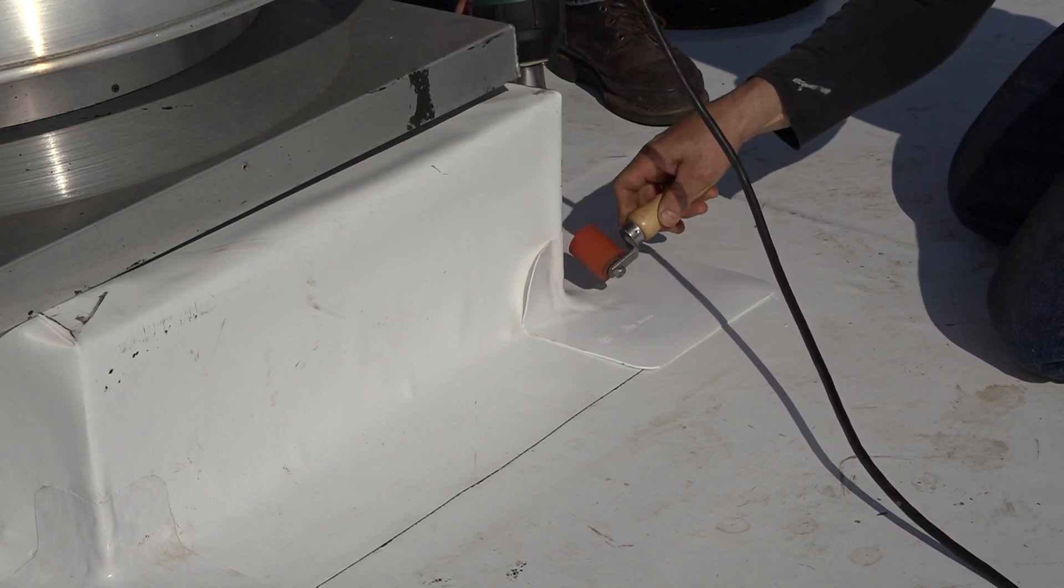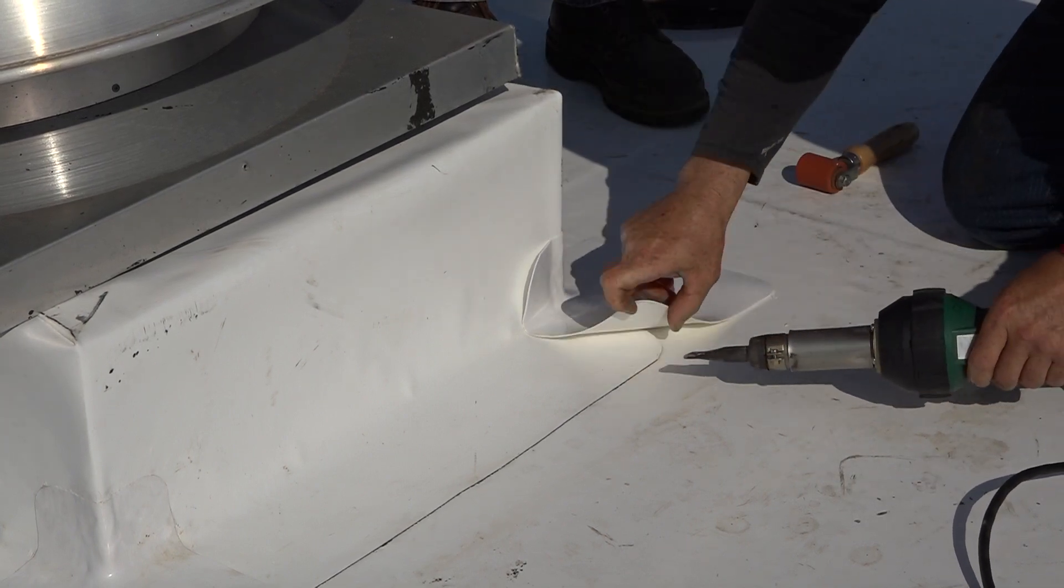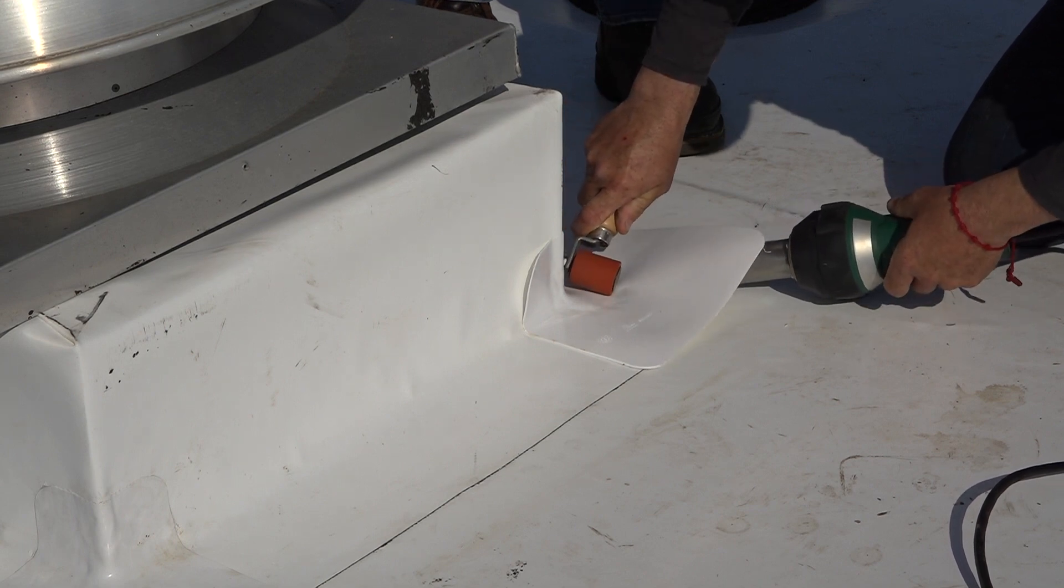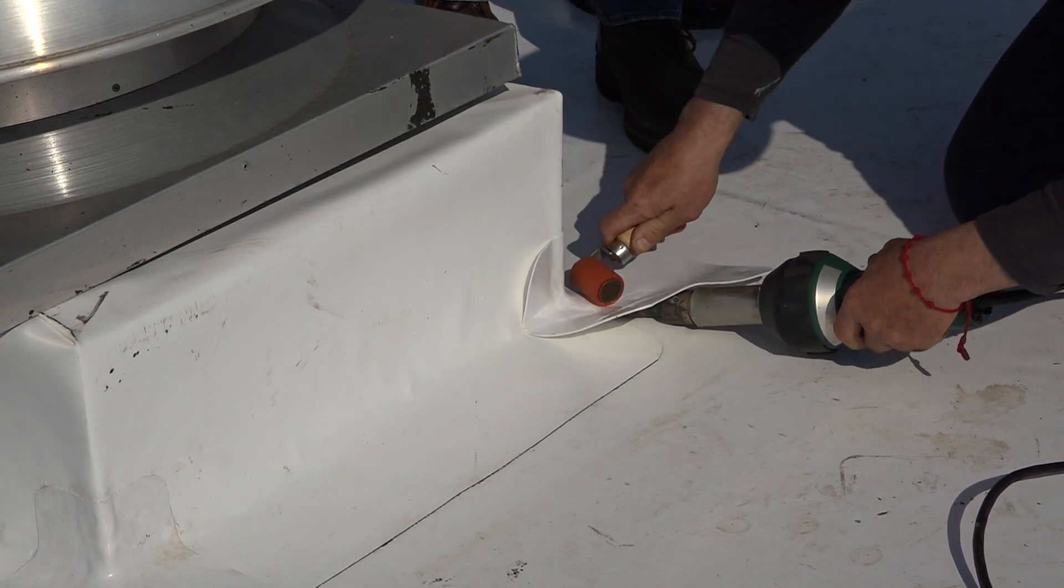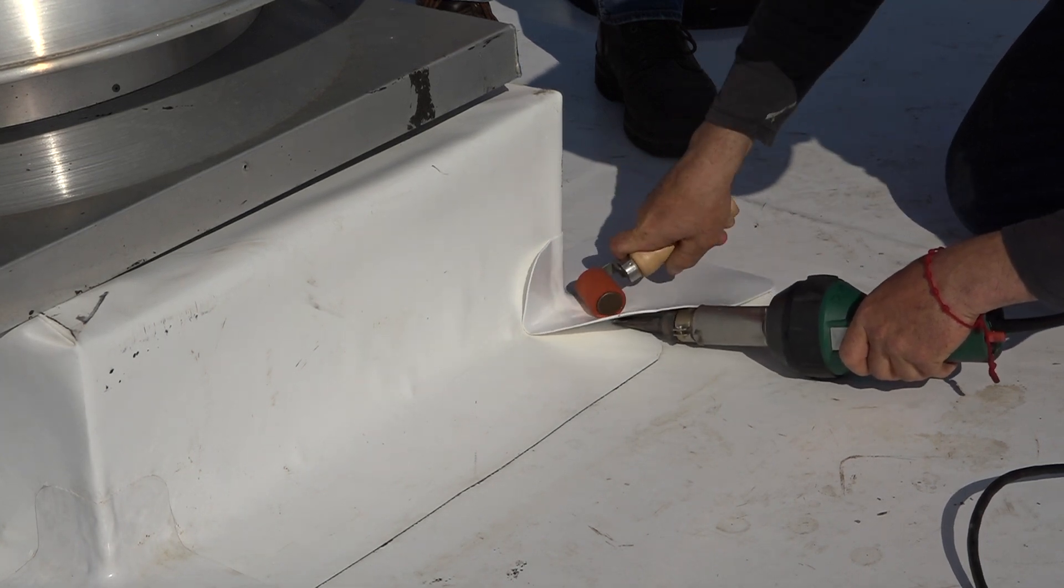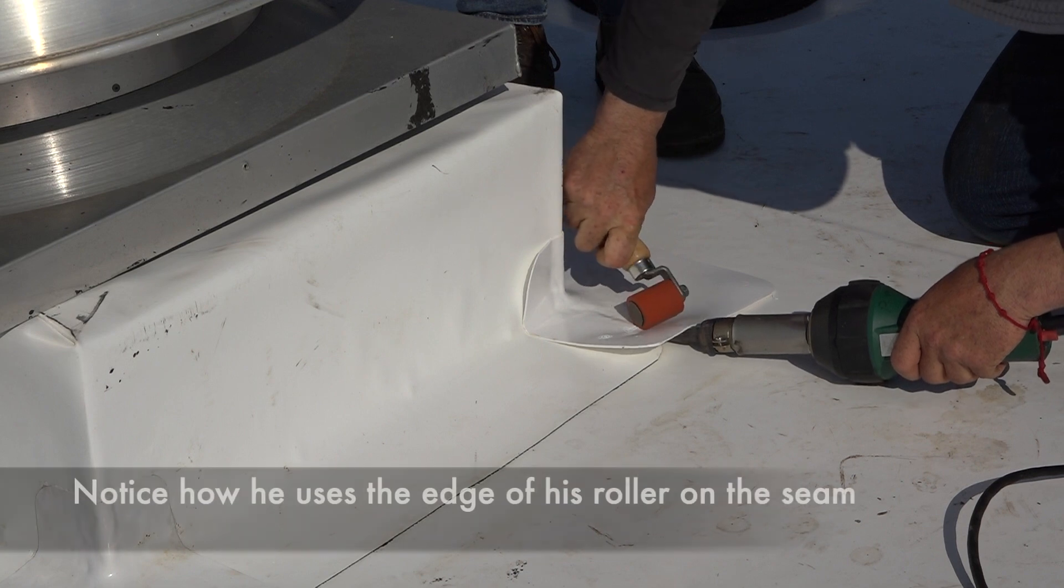Now as you can see when Francisco starts and stops again, he gives it a little time for that to heat again so we don't end up with what they call a cold weld. He actually lets that gun heat just a tiny bit before he starts rolling again.